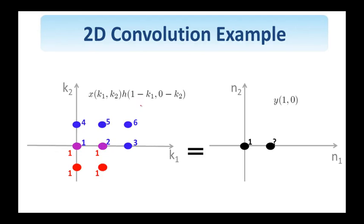The next shift is by 1 in the horizontal and 0 in the vertical direction, so this is the picture that you see here on the left. So the overlap now is at these two pixel locations. The shift is 1, 0, so I'm going to find the output at 1, 0. I carry out the multiplication and the summation and I see that the value of y 1, 0 is equal to 3.